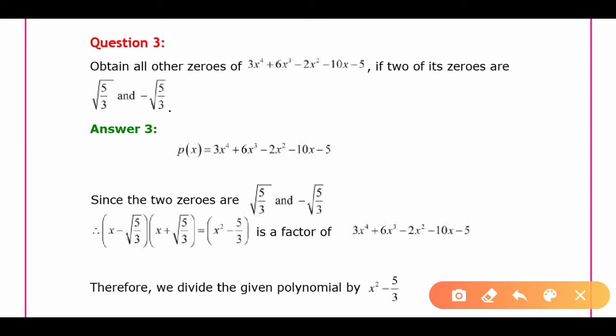Question number 3: Obtain all other zeros of 3x⁴ + 6x³ - 2x² - 10x - 5, if two of its zeros are √(5/3) and -√(5/3).